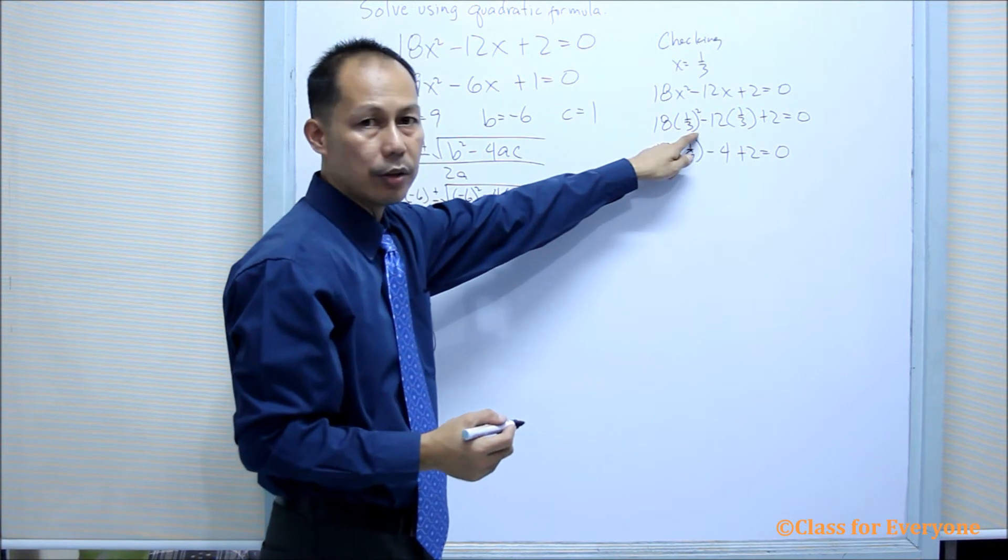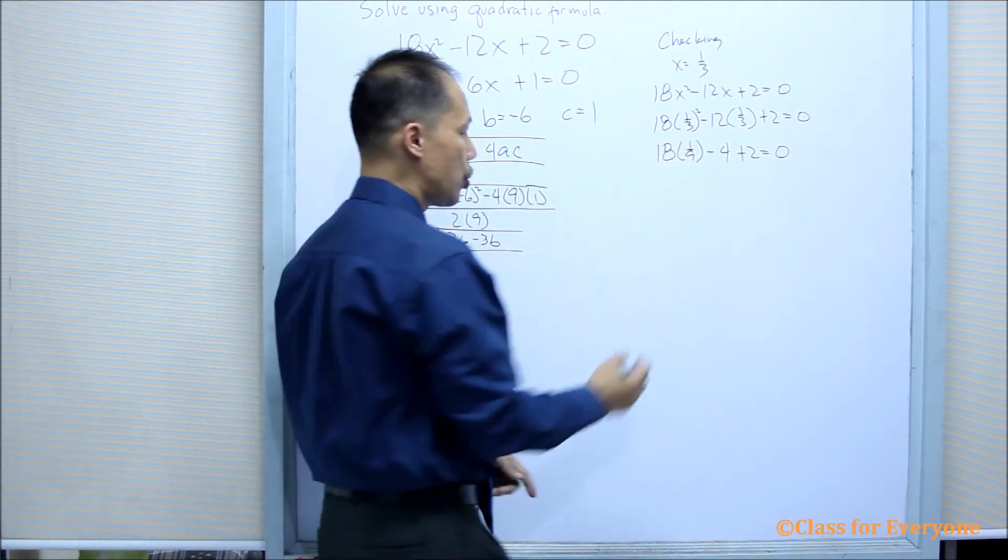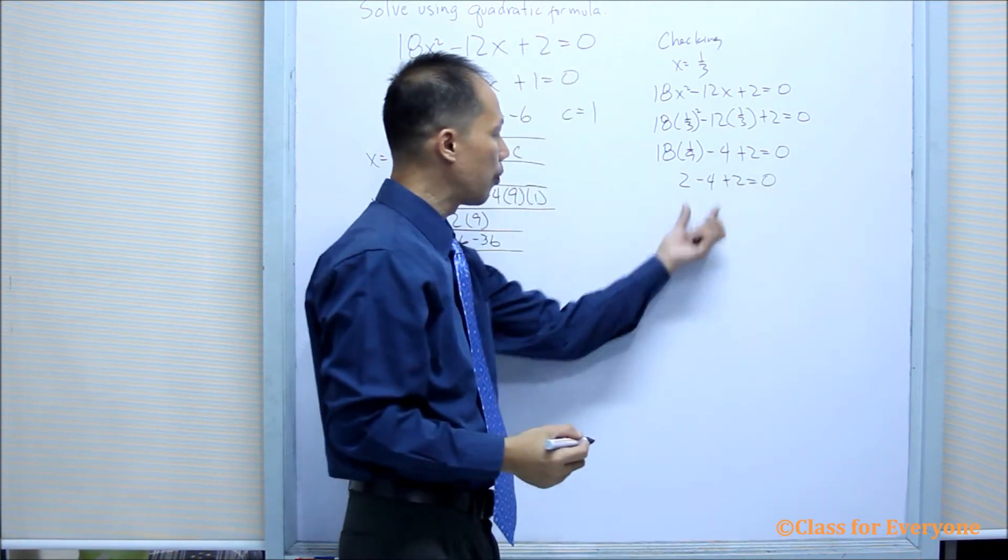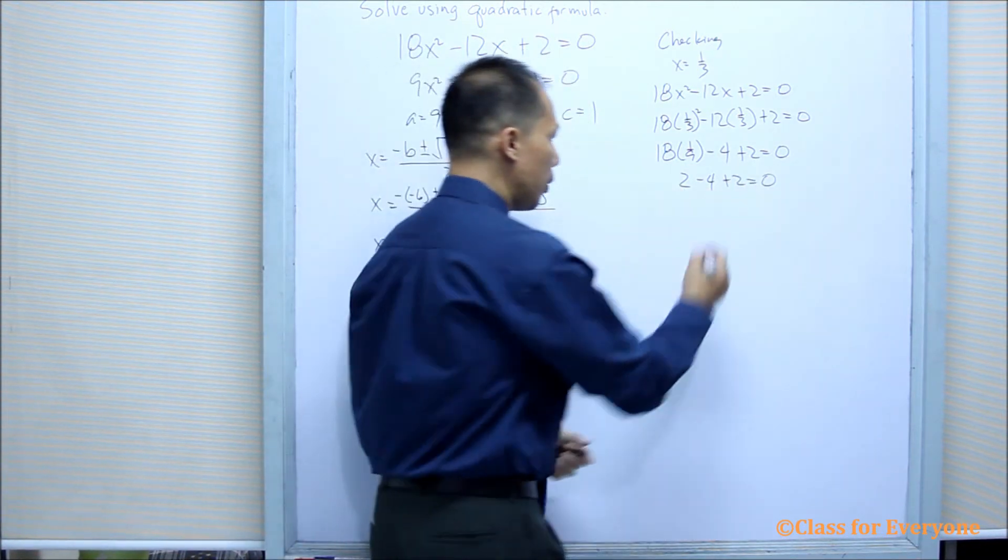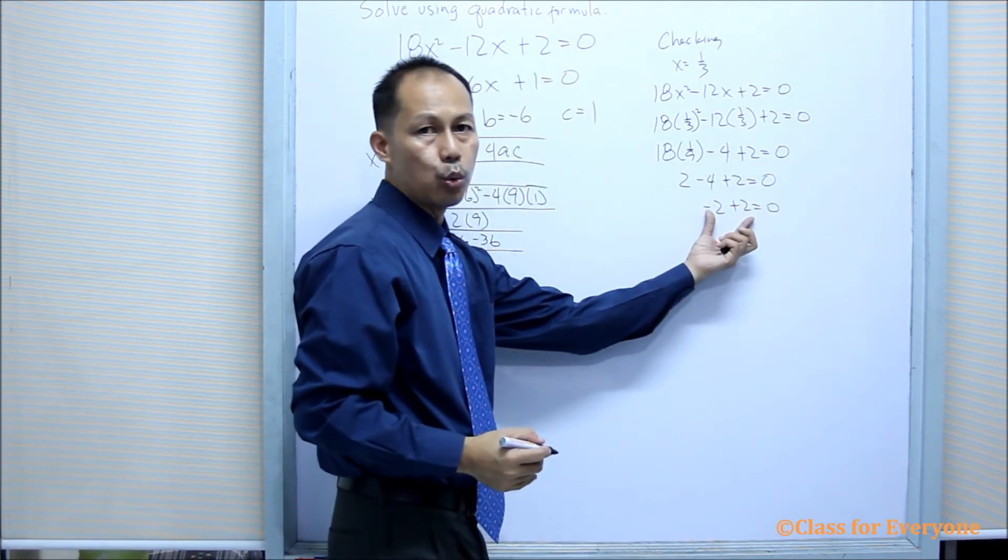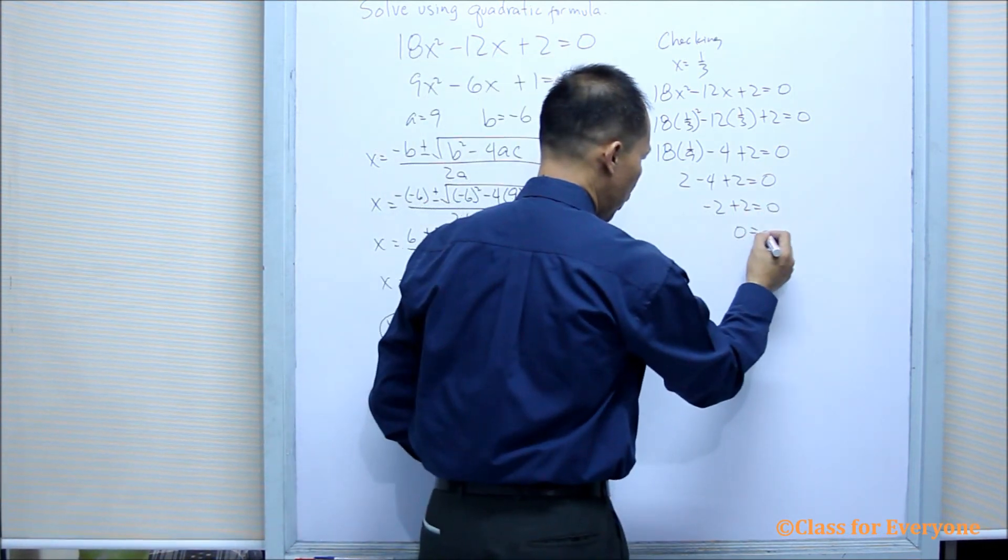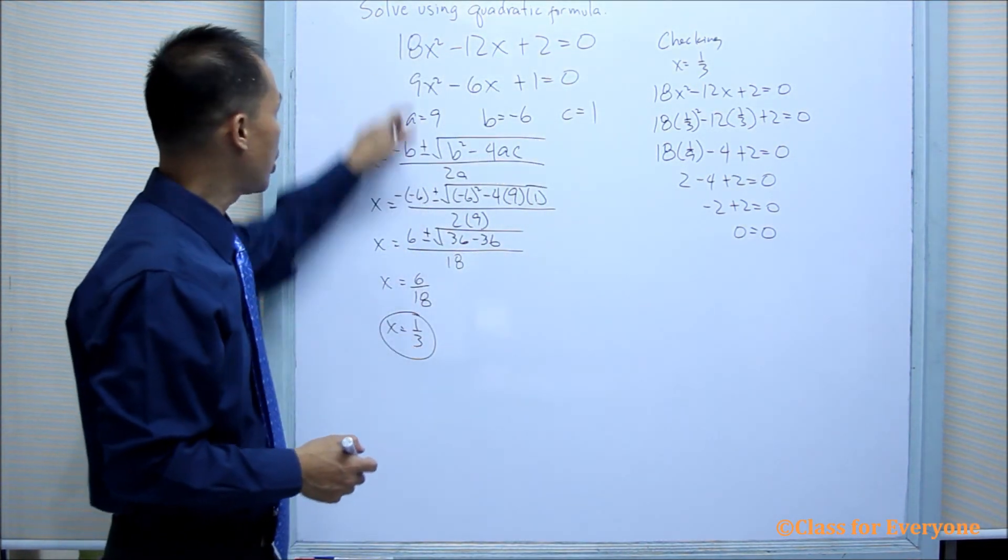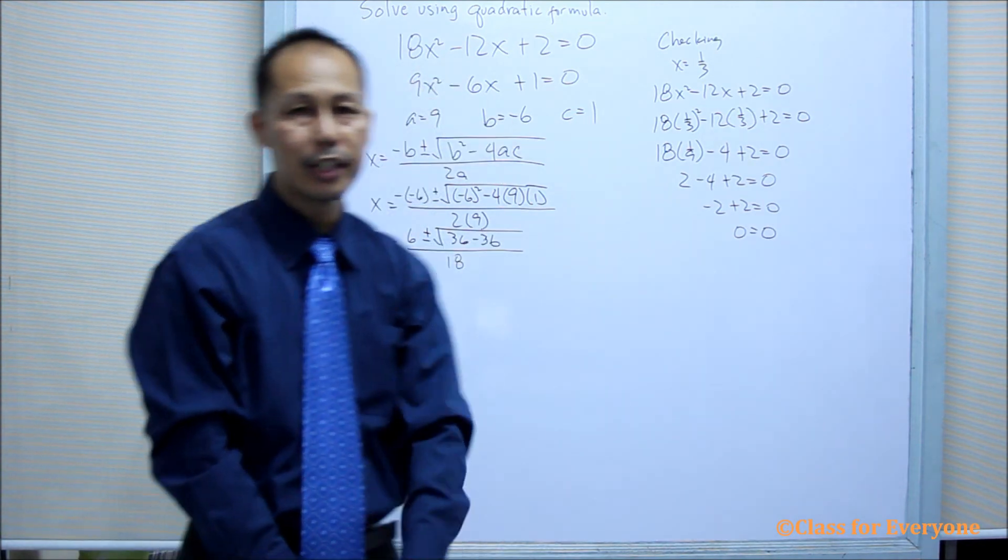18 times 1 minus 4 plus 2 equals 0. 2 minus 4 will give us a negative 2. And then, negative 2 plus 2 will give us 0. This confirms that the value of x equals 1 third satisfies our equation.